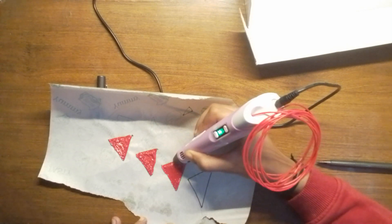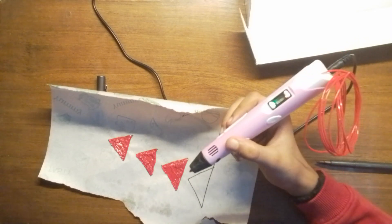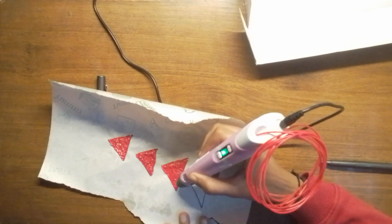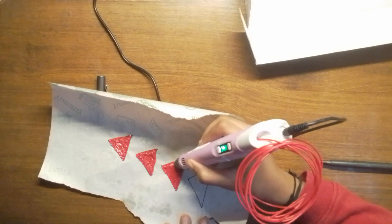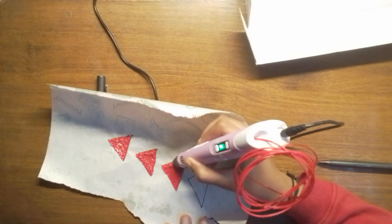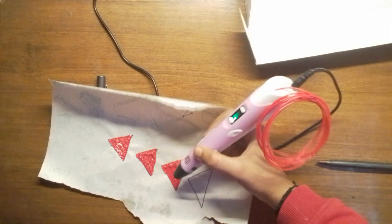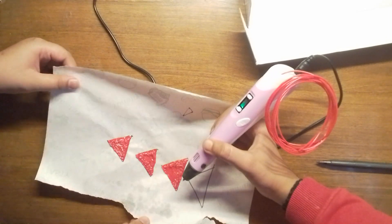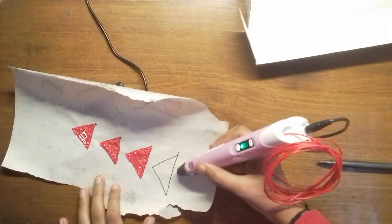Now the triangle is done. If you see any other gaps, just fill them. Done. Now just remove the butter paper from that position. I'm going to complete this quickly.